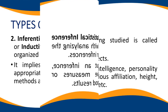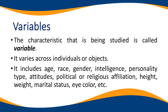The characteristic that is being studied is called a variable. It varies across individuals or objects. It includes age, race, gender, intelligence, personality type, attitudes, political or religious affiliation, height, weight, marital status, eye color, and the like.